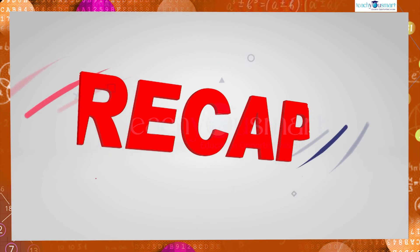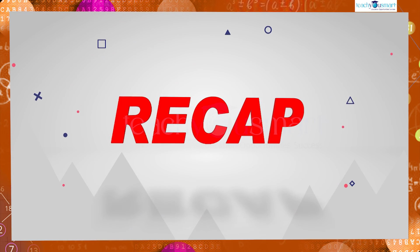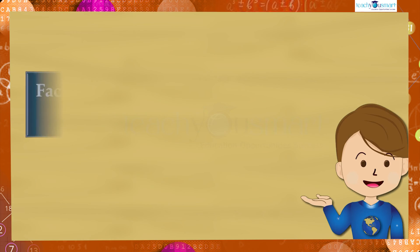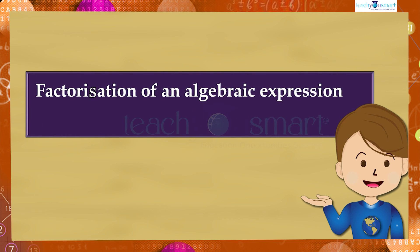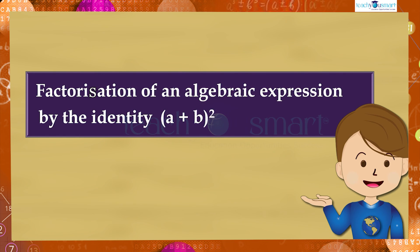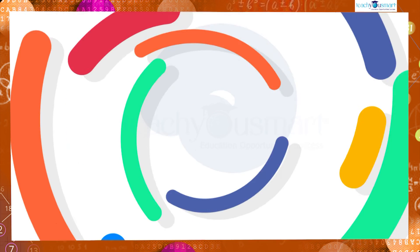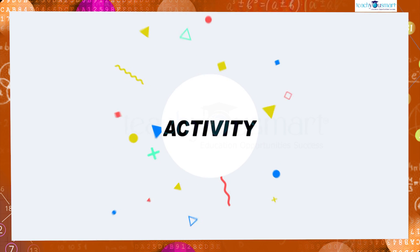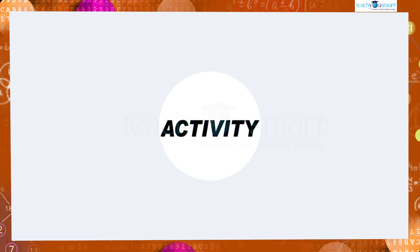Let's recall what we discussed today: factorization of an algebraic expression by the identity (a + b)² = a² + 2ab + b². Before winding up, let's check how much you understood by doing an activity.